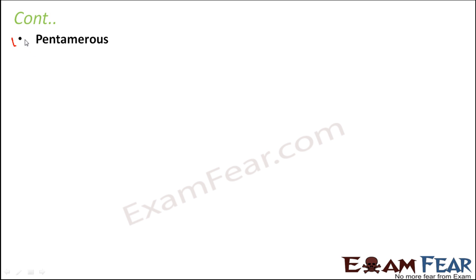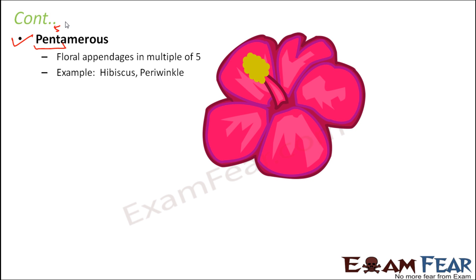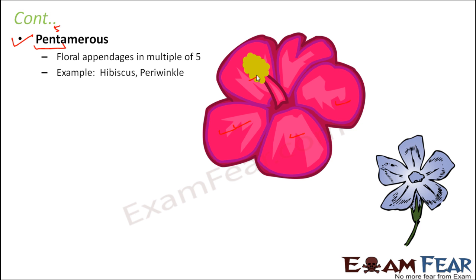The third type is pentamerus. Penta means five, so floral appendages are in multiples of five. Examples would be hibiscus and periwinkle. In hibiscus, you have one, two, three, four, five petals. Similarly in periwinkle, you also have five petals. It does not need to be necessarily five — it could be multiples of five as well, like 10, 15, 20, or 25.